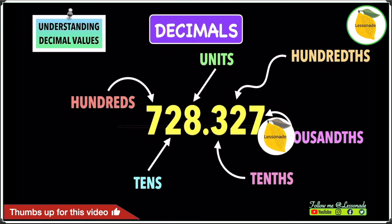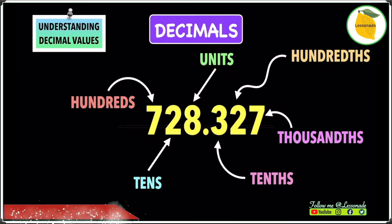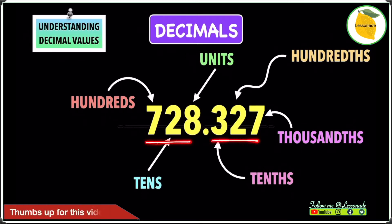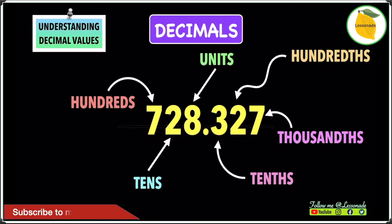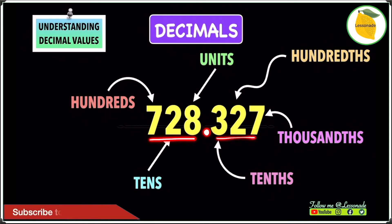So let's have a look at understanding decimal values. Decimals are basically made up of whole numbers and parts of whole numbers. These are the whole numbers and these are parts of the whole numbers, and they are separated by a dot that is called the decimal point.